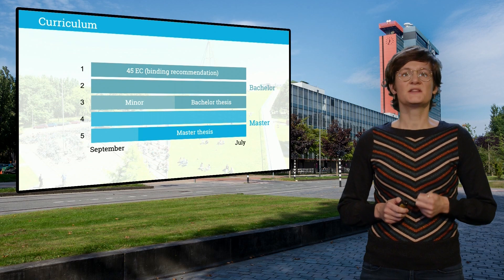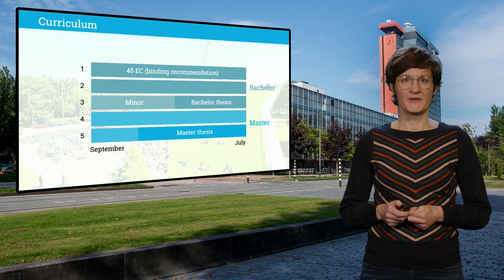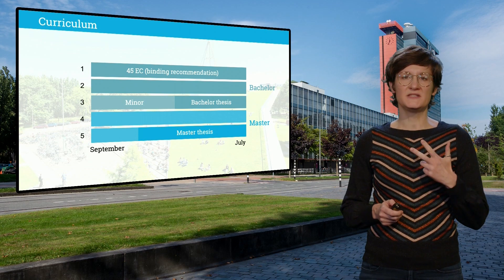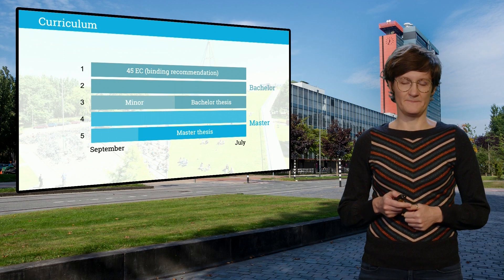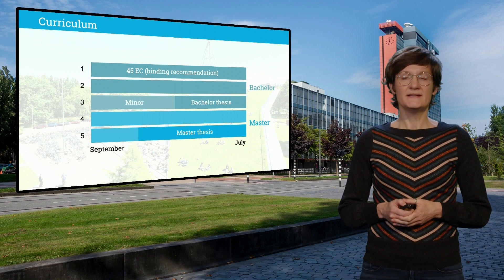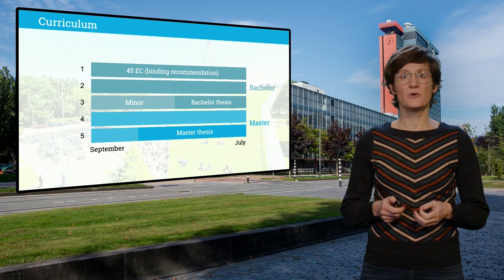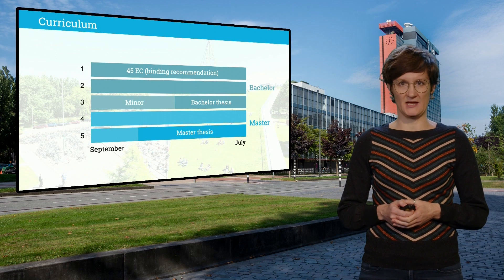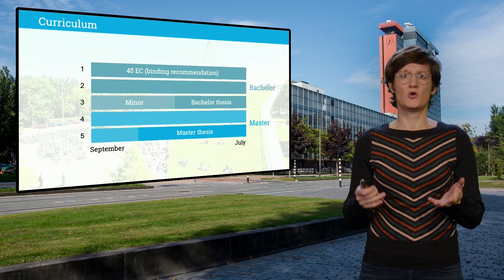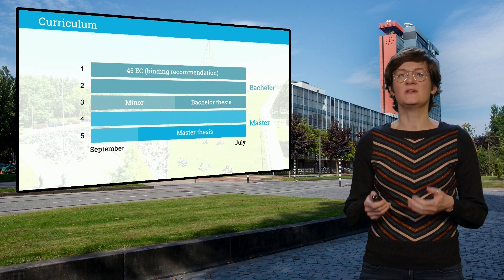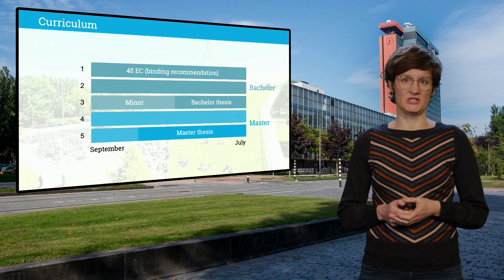The second year consists of compulsory courses and electives. You can choose courses from three different blocks. The first block is multimedia. This variant block teaches you how you can represent, process, and analyze multimedia. For example, recognizing songs from small audio fragments, recognizing and reading number plates, and the automatic recognition of speech.